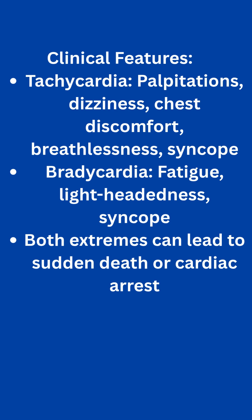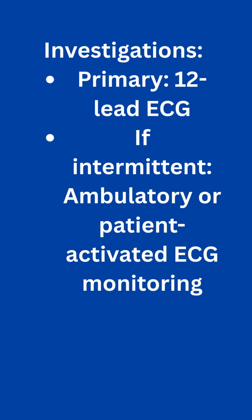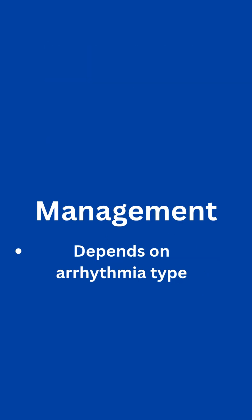Some arrhythmias are silent; others present loudly with palpitations, dizziness, shortness of breath, or even fainting. Extreme rhythms — too fast or too slow — can lead to cardiac arrest or sudden death. The first step in diagnosing an arrhythmia is a standard 12-lead ECG, but if symptoms are fleeting, a Holter monitor or a patient-activated ECG may be used to catch the abnormal rhythm in real time.